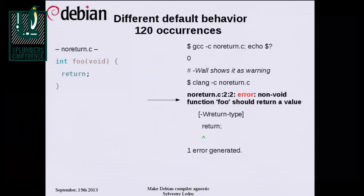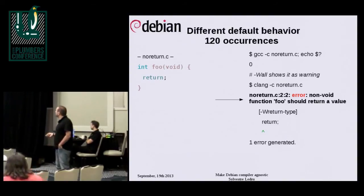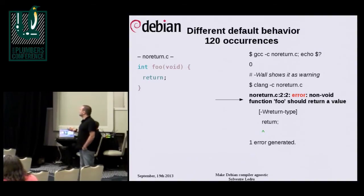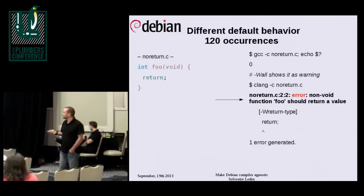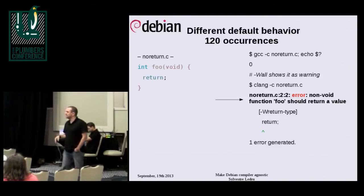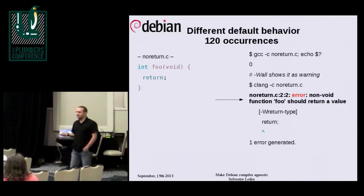This is a nice piece of code: we define a function expecting an int and we return nothing. GCC doesn't show anything by default — only with -Wall — but Clang considers it an error. We have this 120 times in the archive, which is really crappy code. Hopefully it's hidden in base code and not in public libraries. This is just to answer Linus — the user land is very crappy and this is the kind of thing we see all the time in the Debian archive.